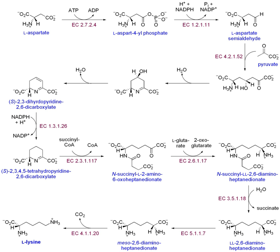The biosynthetic pathway for sphingosine involves palmitoyl-CoA and serine undergoing a condensation reaction, which results in the formation of dehydrosphingosine. This product is then reduced to form dihydrosphingosine, which is converted to sphingosine via the oxidation reaction by FAD.